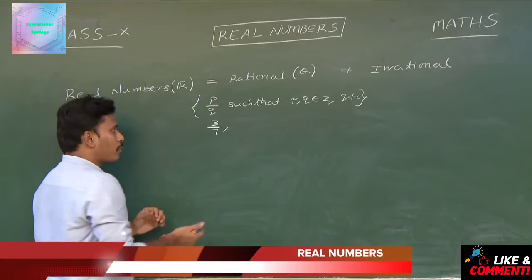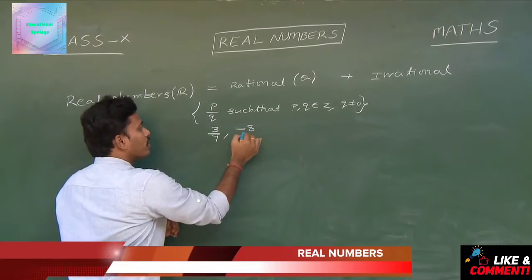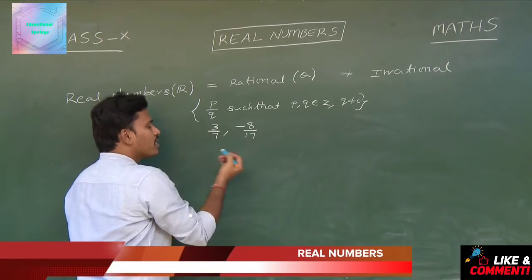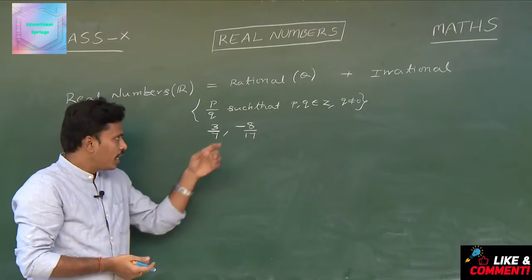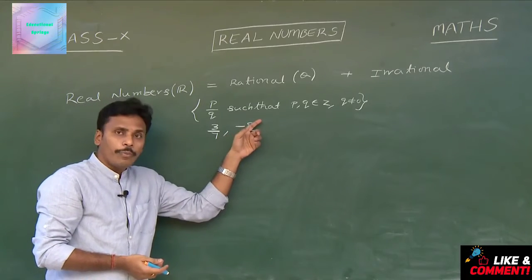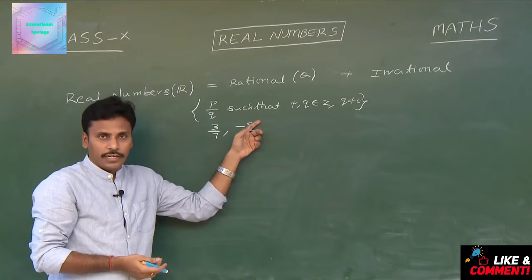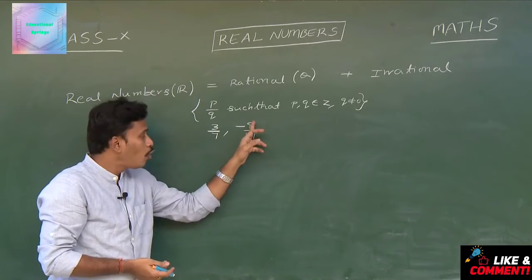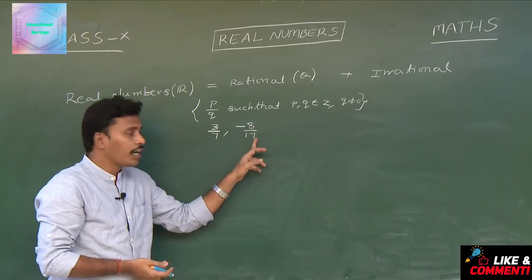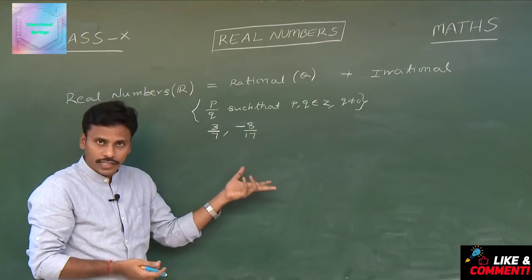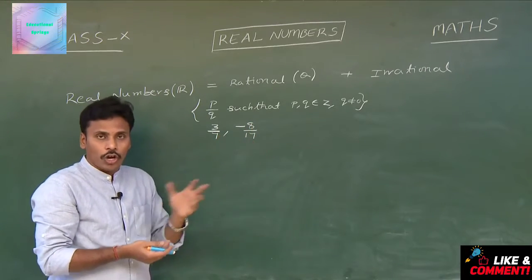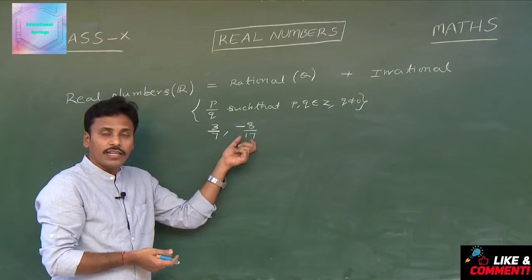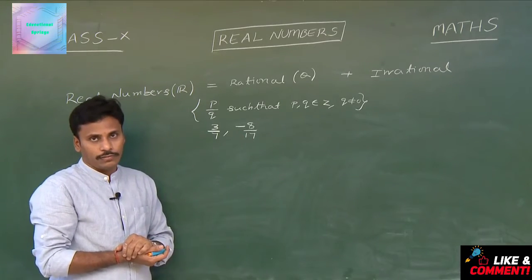If we have a number like minus 8 by 17, here P is minus 8 and Q is 17. Both P and Q are integers and the denominator is non-zero. So minus 8 by 17 is again a rational number.